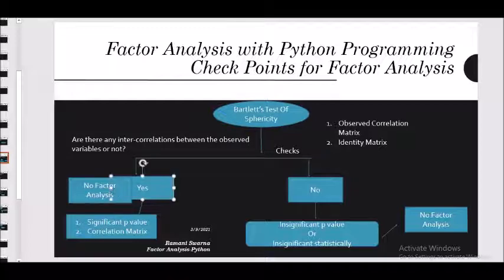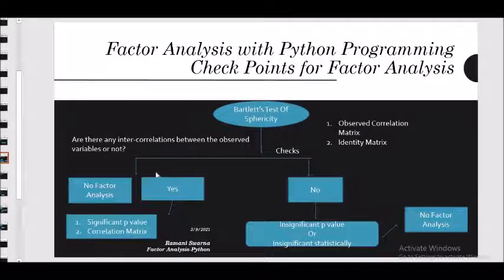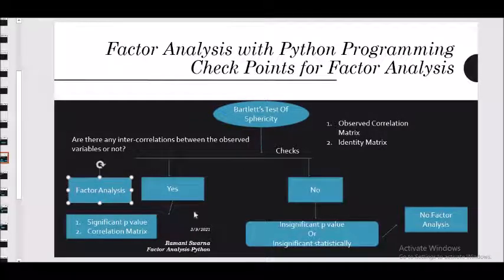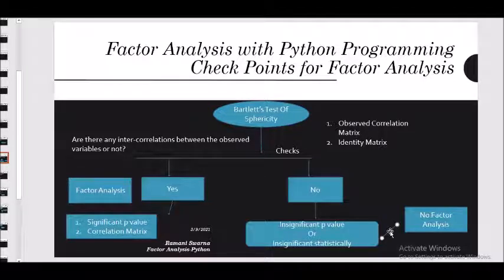If you find that yes, there is correlation, you can proceed further. If there is no correlation, you would find insignificant p-values — also called statistically insignificant. If the p-value is insignificant, that means you cannot proceed further with the factor analysis. However, if the p-value is statistically significant, that means you can proceed further with the factor analysis. This is called the Bartlett's test of sphericity.